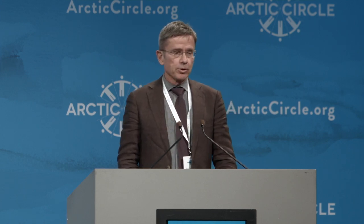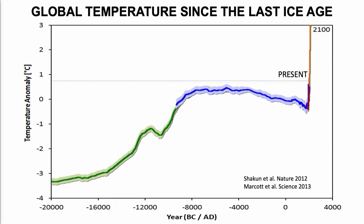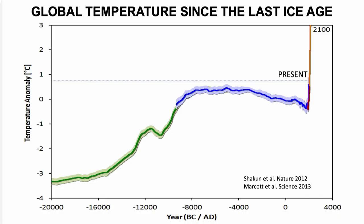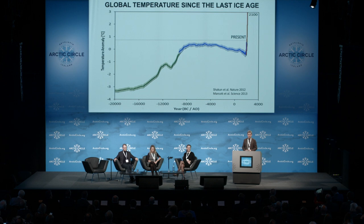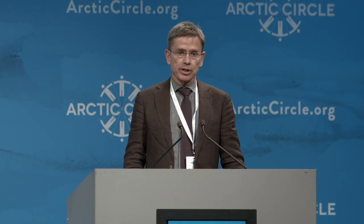This diagram is the fruit of decades of paleoscience using sediment cores and ice cores from many places around the world, which by now enables us to reconstruct the evolution of global average temperature since the last ice age 20,000 years ago. You see here the warming from the ice age into the Holocene by about 4 degrees.